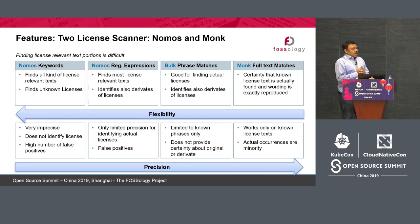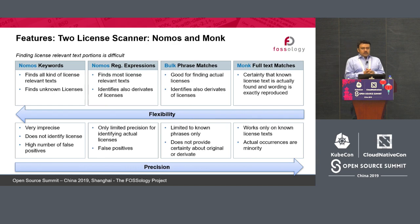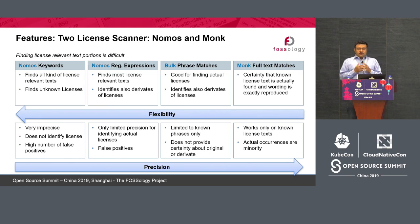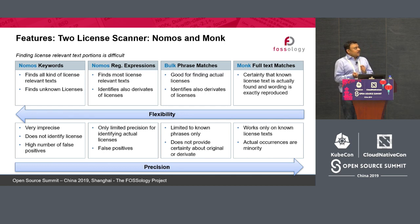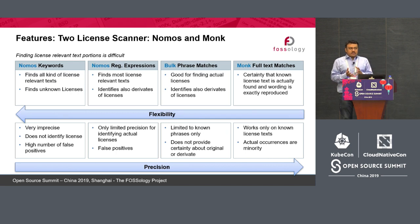FOSSology has two main agents called MONK and NOMOS. NOMOS is mainly keyword-based and uses regex, while MONK is basically more of a text-matching approach. Going from MONK to NOMOS gives you flexibility, but precision increases going from NOMOS to MONK.